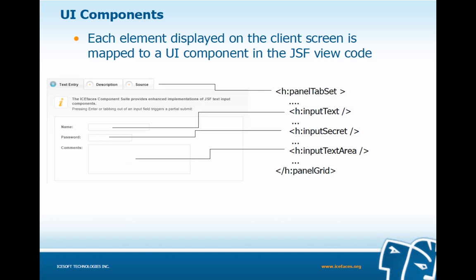With UI components, each element displayed on the client screen is mapped to a UI component in our JSF view code. On the left-hand side, we have a panel tab set containing three different types of input: input text, input secret, and input text area. On the right-hand side is our JSF view code, with an encapsulating H panel tab set component, and nested within it, our input text for name, input secret for password, and input text area for comments.